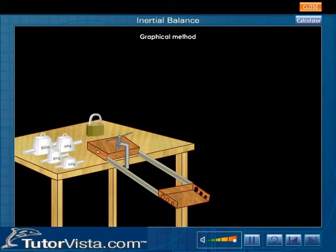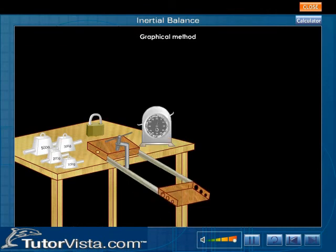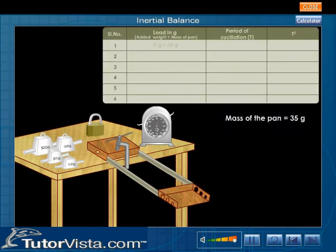The graphical method is used to calculate the unknown mass when k is not known. Let us now find a relation between the masses and their time period. Pull the board horizontally a little and allow it to oscillate simple harmonically. Record the time period of oscillation in the observation table.